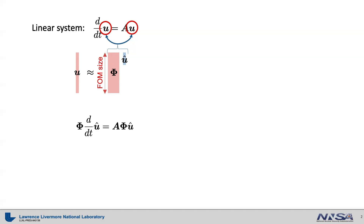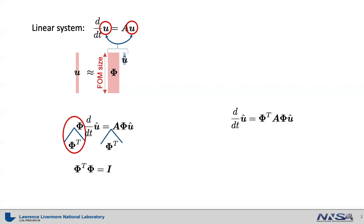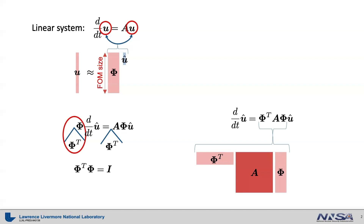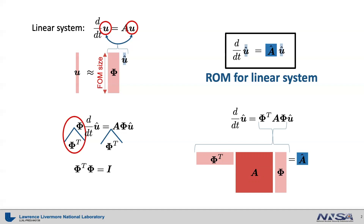We should not have any term with full order model size. To get rid of the full order model size term, we multiply both sides by phi transpose. Note that phi transpose times phi is the identity matrix because phi is an orthonormal matrix. Therefore, this term goes away, and we are left with the time derivative of u hat equals phi transpose times A matrix times phi times u hat. Note that phi transpose times A times phi becomes a small square matrix A sub hat, and this can be pre-computed because the system matrix A is constant. Therefore, the resultant reduced order model for the linear system is completely free of the full order model size.